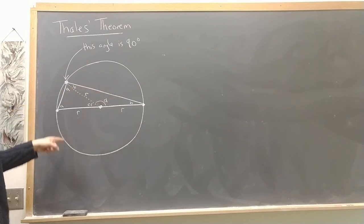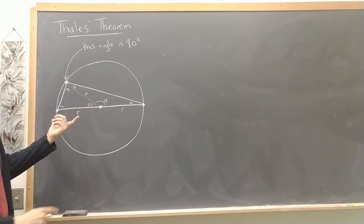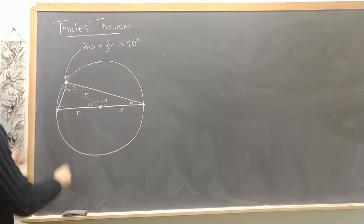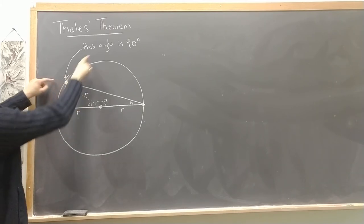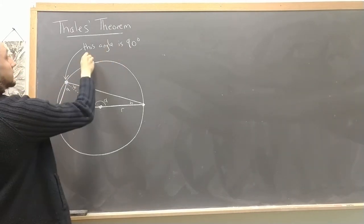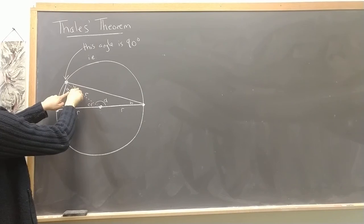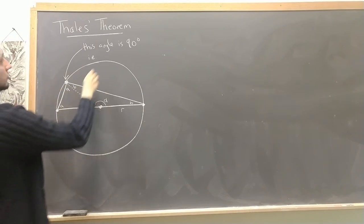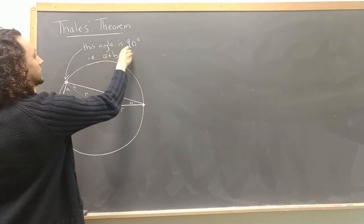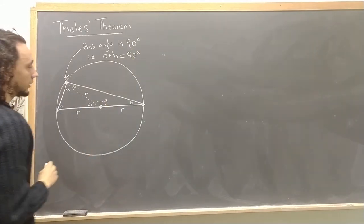And because of the way I've labeled things, we have a few relevant equations. First of all, the thing we're looking for, this angle that I'm claiming is 90 degrees, that's just A plus B, these two angles from these two triangles. So the thing I'm trying to prove is that A plus B equals 90 degrees.